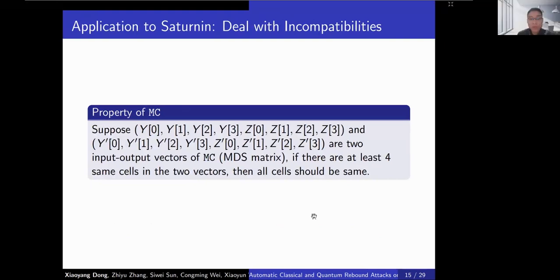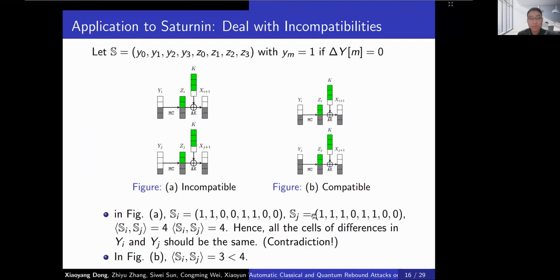We use the property of MDS matrices to quickly filter impossible solutions derived by our MILP model. That is, if there are at least four identical cells in the two input-output vectors of MC, all other cells should be the same. For example, in Figure A, we use the inner product of S_i and S_g to calculate the number of same cells — it is four in Figure A, so all differences in Y_i and Y_g should be the same. However, they are different, creating a contradiction. Figure B shows a possible case.